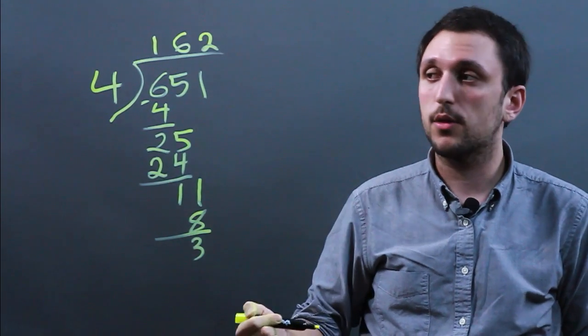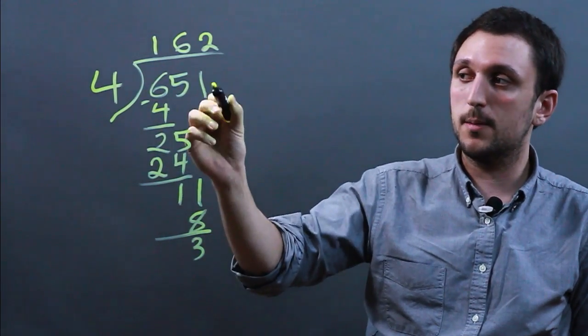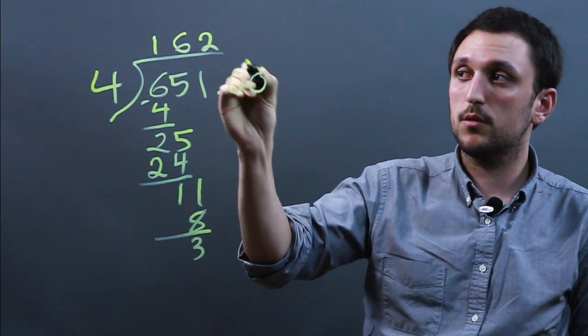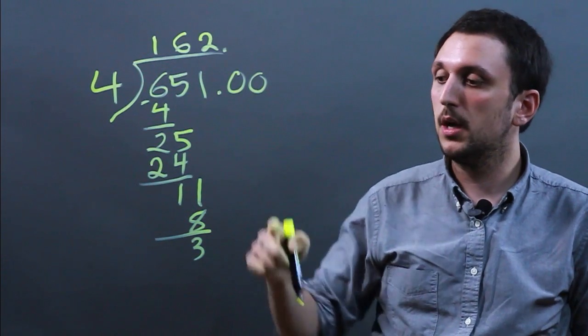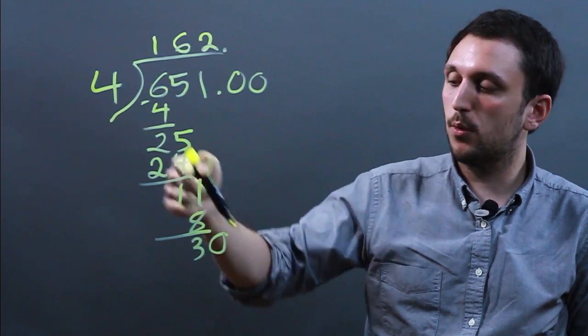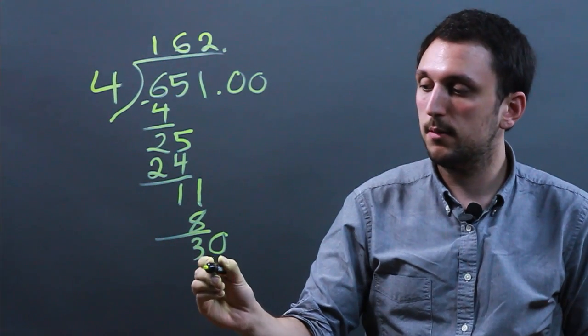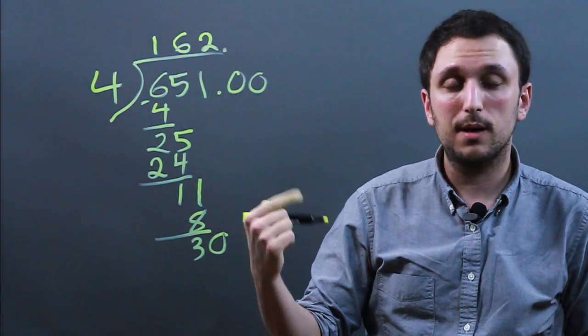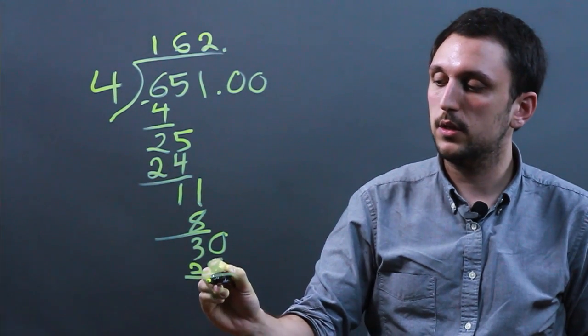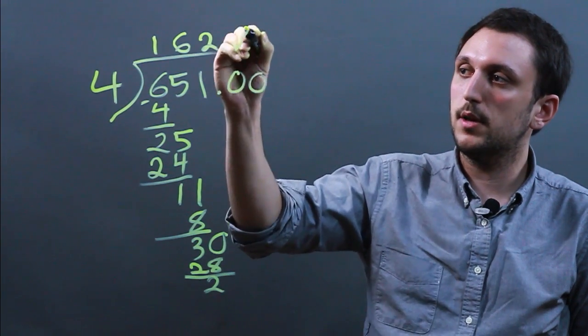Now again, 4 does not go into 3 and at this point we've run out of numbers. So what we do is we create zeros and we put a decimal up here. We drop down a 0 and 4 goes into 30 seven times. So 4 times 7 is 28 and that's going to leave us with 2. So we put a 7 up here.